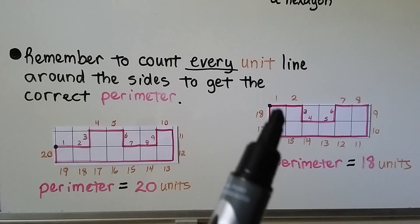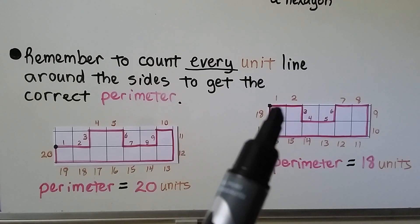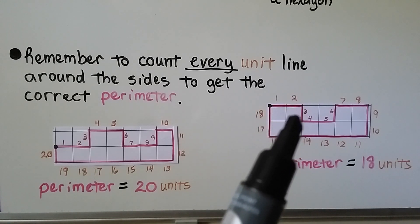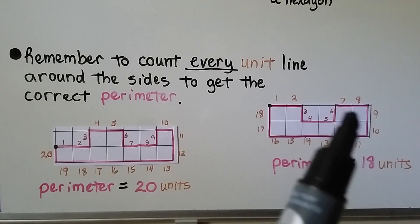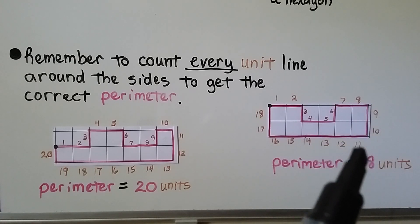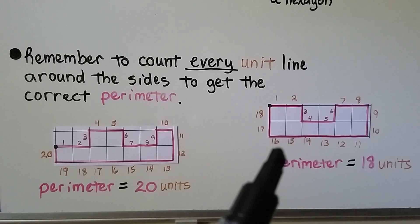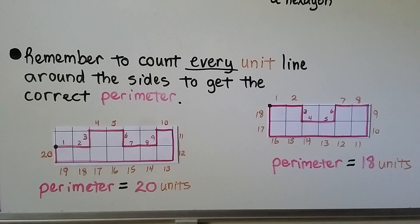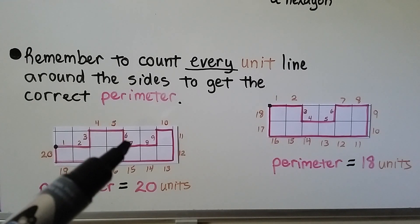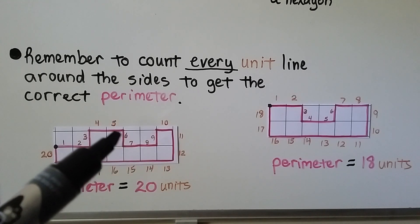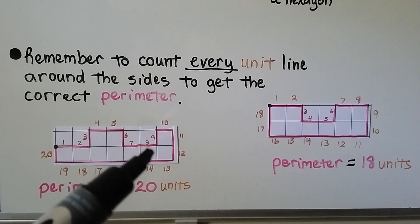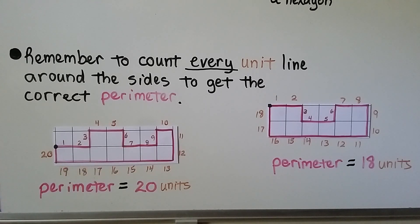For this one, we start at one point and count: 1, 2, 3, 4, 5, 6, 7, 8, 9, 10, 11, 12, 13, 14, 15, 16, 17, 18. This perimeter is equal to 18 units. Make sure you count every unit line — even when coming around corners, each little line counts. We have to count them all.